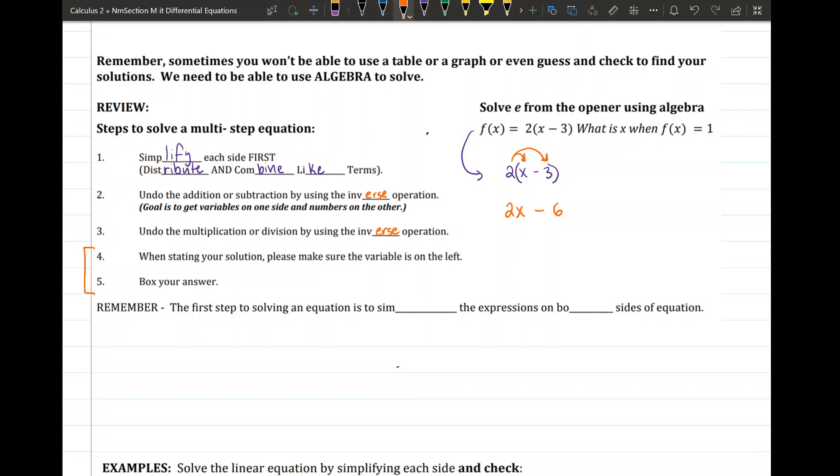Steps 4 and 5 are really just neatness steps. These are for neatness. Depending on how great of a day I'm having it won't affect your score if you don't remember to write the variable on the right side. So we always want to remember that first step is to simplify the expression on both sides. So that means distribute and combine like terms on both sides.